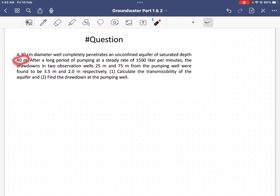After a long period of pumping at a steady rate of 1500 liters per minute, the drawdowns in two observation wells 25 meters and 75 meters from the pumping well were found to be 3.5 meters and 2 meters respectively.